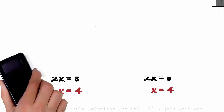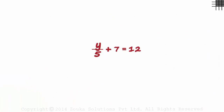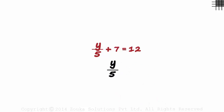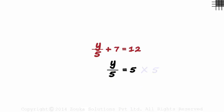Meanwhile, let's try solving a couple of linear equations. How do we solve for the value of y? As we need just y on the left hand side, let's transpose 7 to the other side first. We get y by 5 as 12 minus 7, which is 5. Now transposing this 5 in the denominator to the right hand side, we get the value of y as 5 times 5, which is 25.